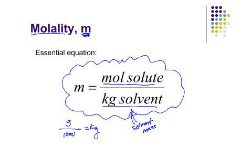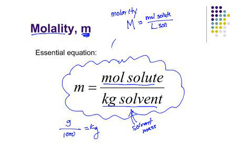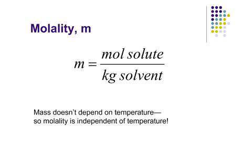I want to contrast molality, which is our focus, with molarity, which is another commonly used concentration unit. Molarity is given the symbol capital M, and it's defined as the moles of solute over the volume of the solution in liters. Students confuse them very easily: molality is moles per kilogram of the solvent only, whereas molarity is moles of solute in the final volume of the total solution. Make sure you don't confuse them — our focus right now is molality.